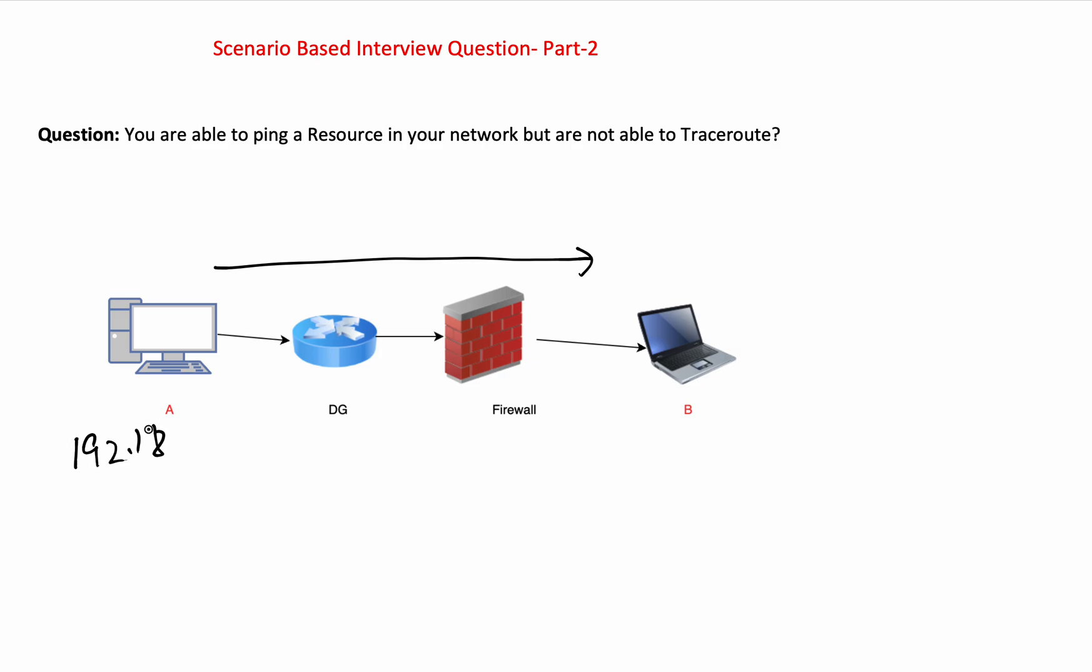Basically from A to B you're able to ping. Let's take this as IP 192.168.1.1 and this one is 10.1.1.1, just for example. So from here to here you're able to ping it—ping is successful—but you're not able to do traceroute. Once you try to do traceroute, it just stops and gives you an error.